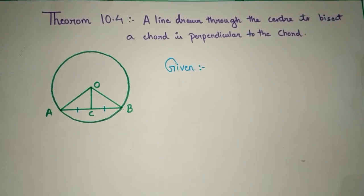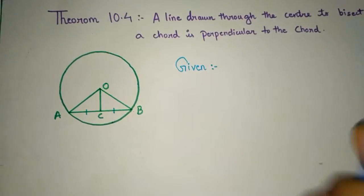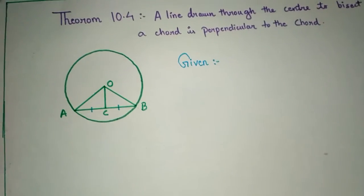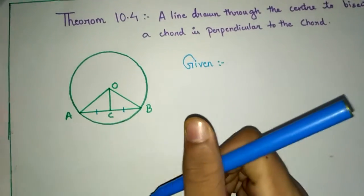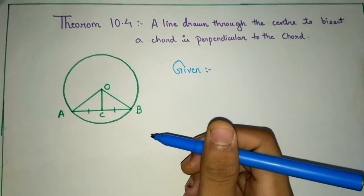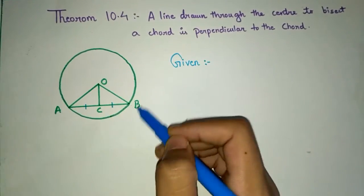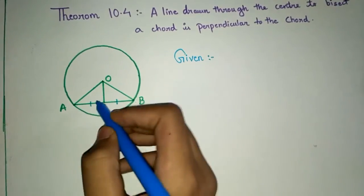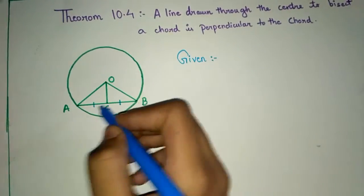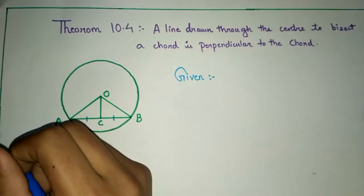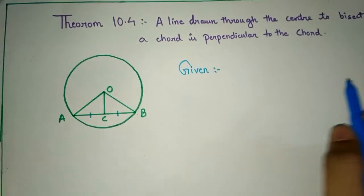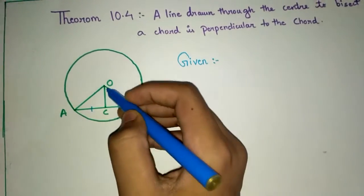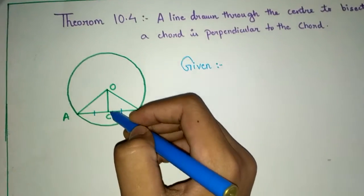This is just the converse of theorem 10.3. In this we are given that SC is equal to CB and we have to prove that OC is perpendicular to AB. In theorem 10.3, OC is perpendicular to AB and we have to prove SC equals CB — so this is just the converse.